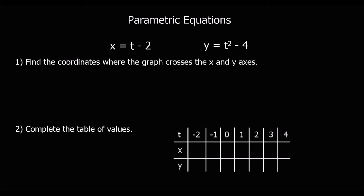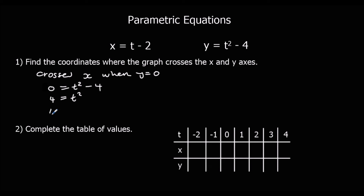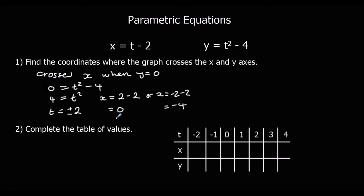It crosses the x-axis when y equals 0. Setting y equals 0 gives t squared minus 4 equals 0, so t squared equals 4, meaning t equals plus or minus 2. We put both t values into the x equation: x equals 2 minus 2 equals 0, or x equals negative 2 minus 2 equals negative 4. So it crosses the x-axis at (0, 0) and (−4, 0).